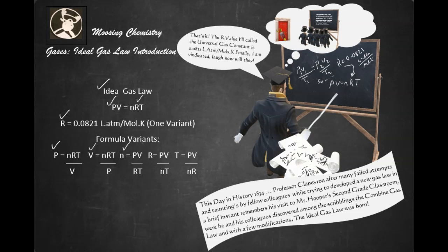And if you want to find the number of moles, it's pressure times volume divided by the universal gas constant times the temperature. If you want to find the R value, it's pressure times volume over moles times temperature. And if you want to find temperature, it's pressure times volume divided by moles times the universal gas constant.